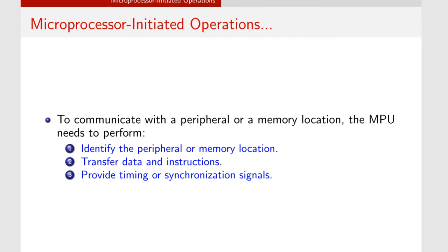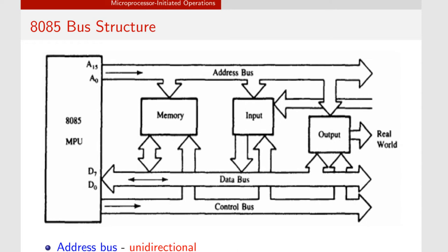Now coming to the 8085 microprocessor bus structure. The 8085 is an 8-bit microprocessor because it contains an 8-bit data bus — meaning it manipulates 8 bits of data at a time. The 8085 bus structure consists of different buses. A bus is a communication path used to transfer information such as data, address, or sometimes control signals.